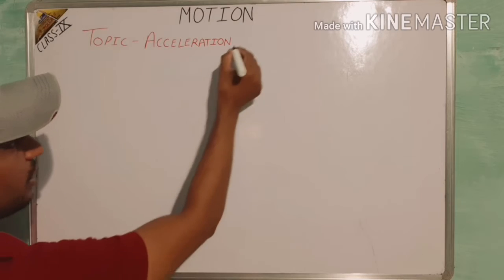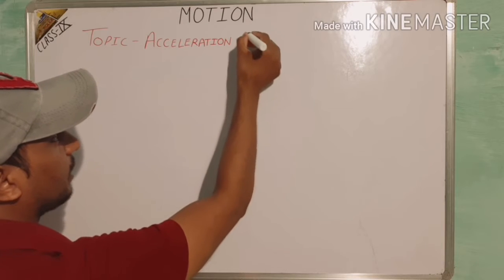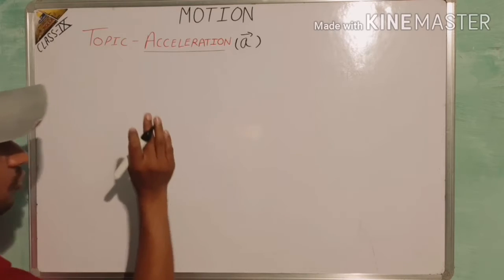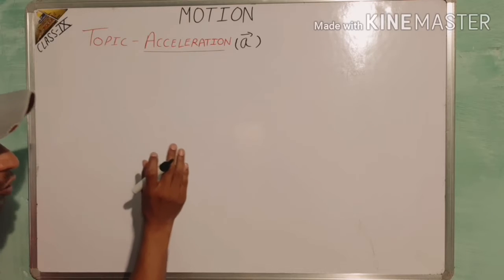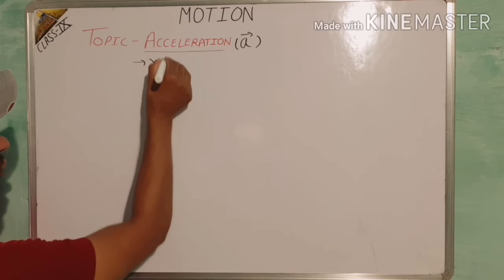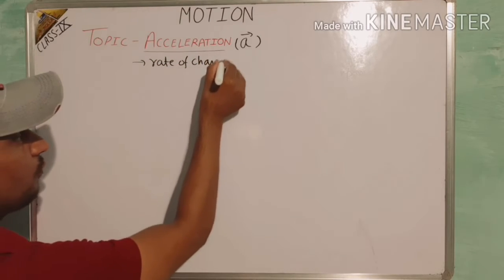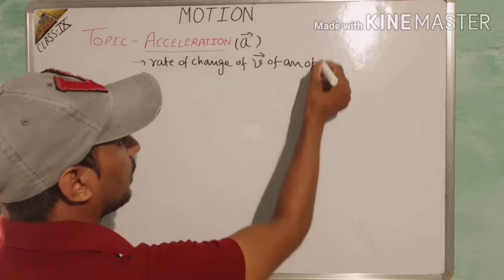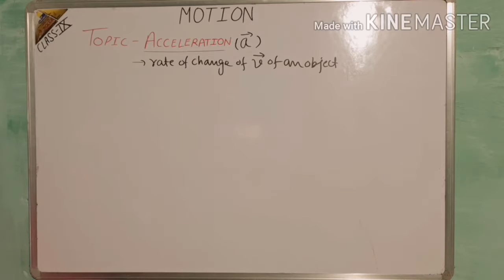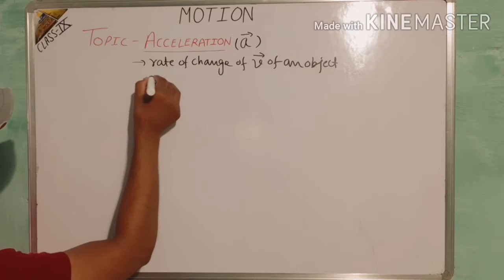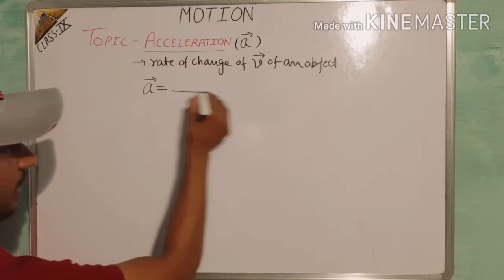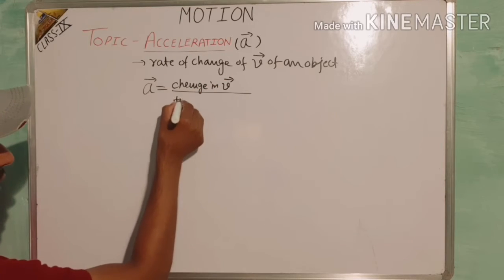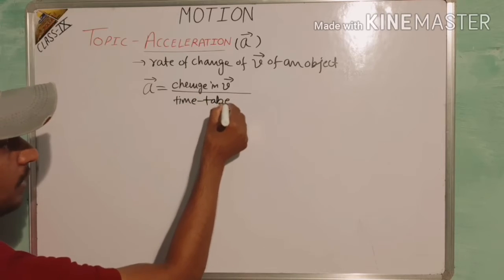Acceleration is a vector quantity. It is represented by the letter 'a'. The formal definition of acceleration is: acceleration of an object is defined as the rate of change of velocity of an object. If an object's velocity changes with respect to time, that is called acceleration — rate of change of velocity with respect to time taken.